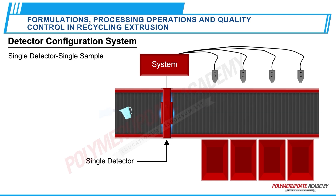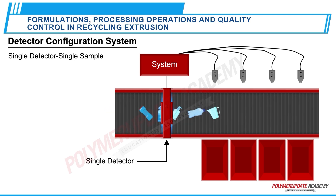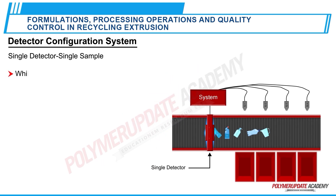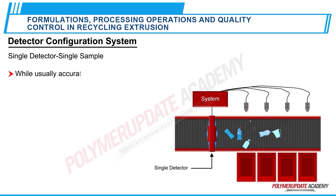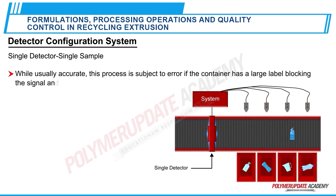As each container passes the detector, several readings are taken instantaneously and a decision is made by the computer. While usually accurate, this process is subject to error if the container has a large label blocking the signal and thus restricting data input to the computer.